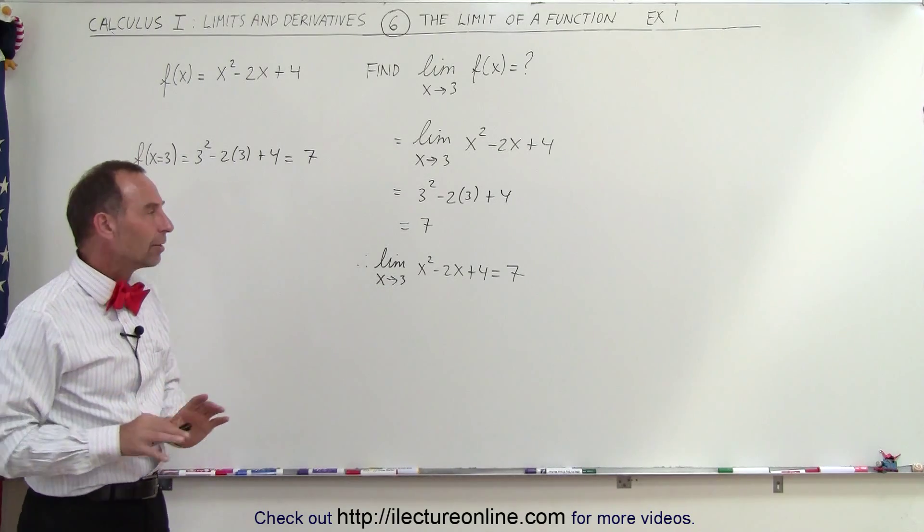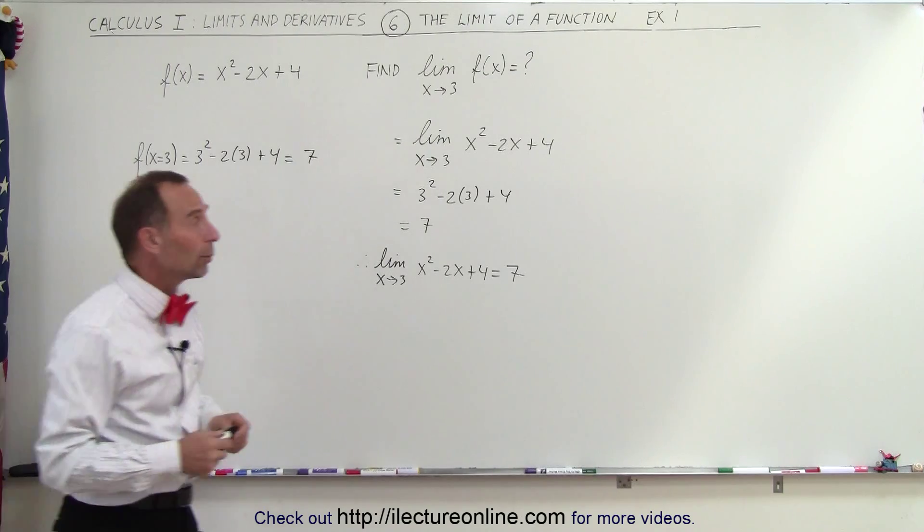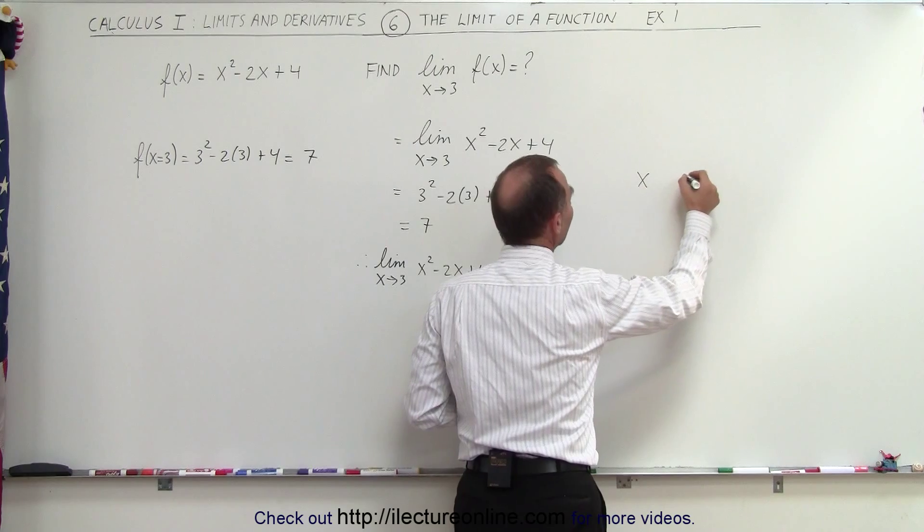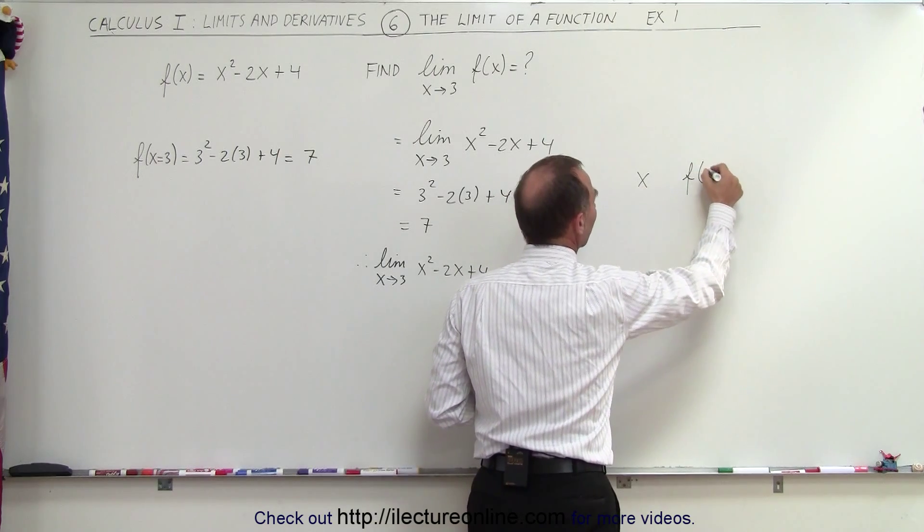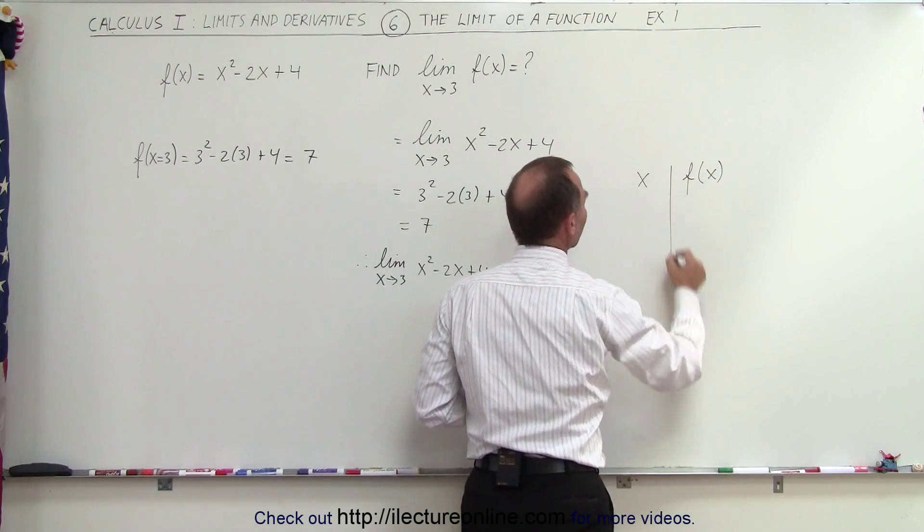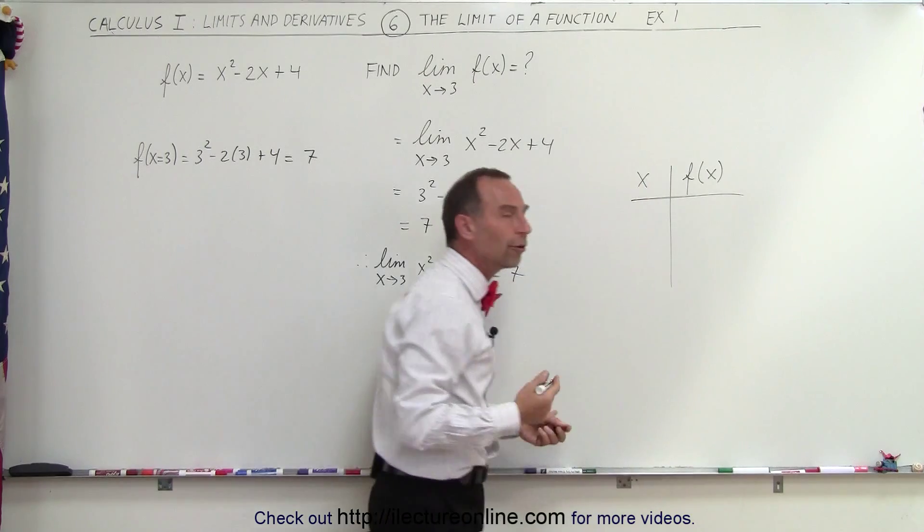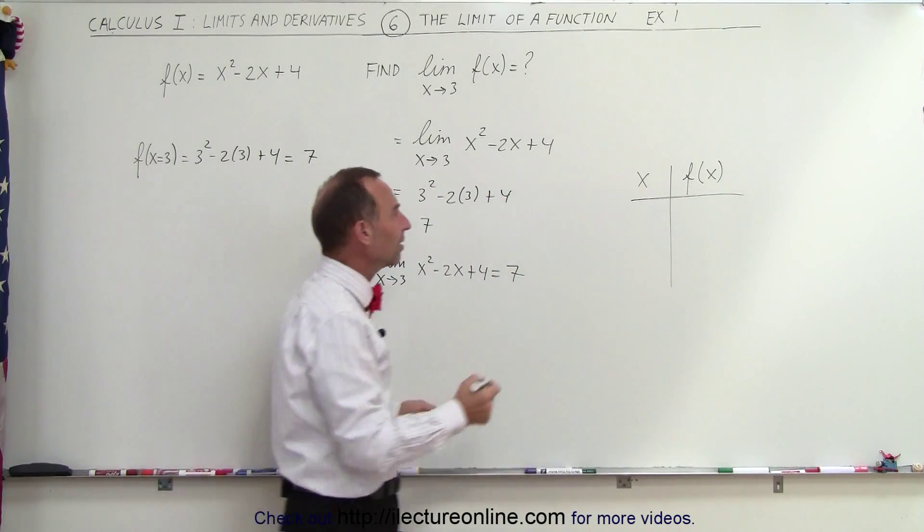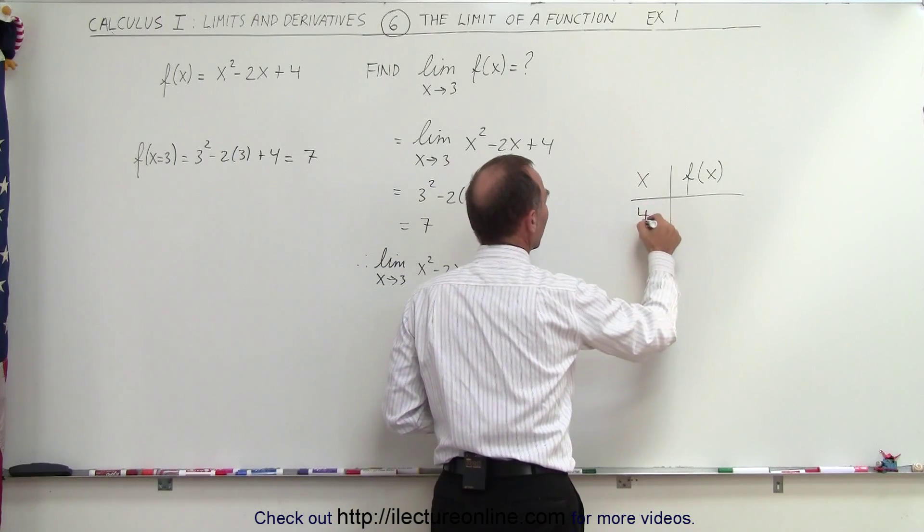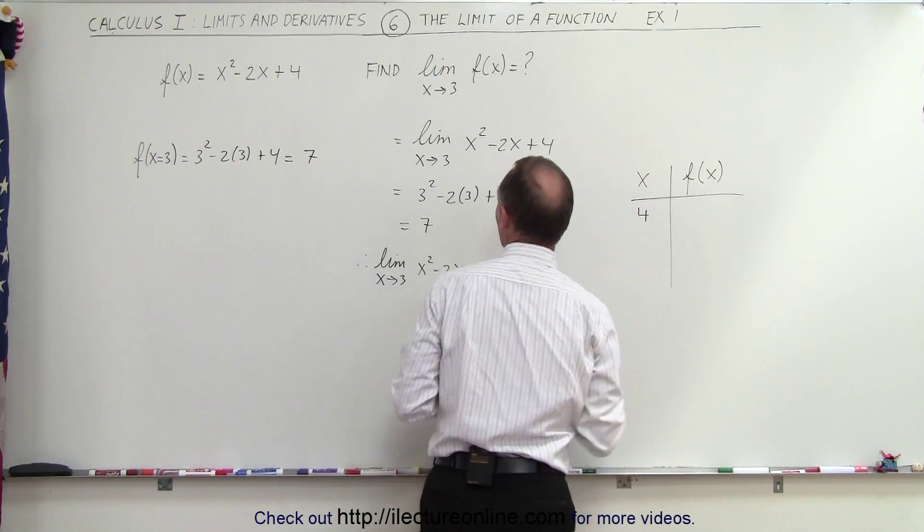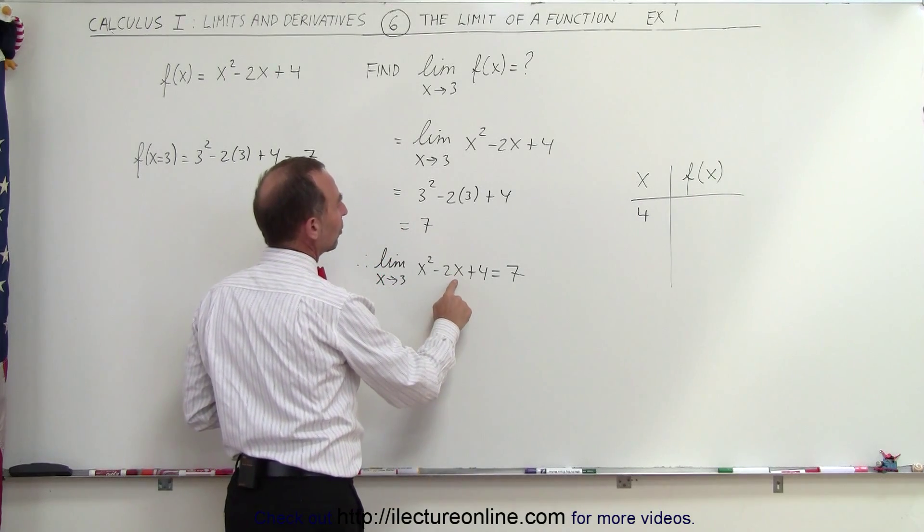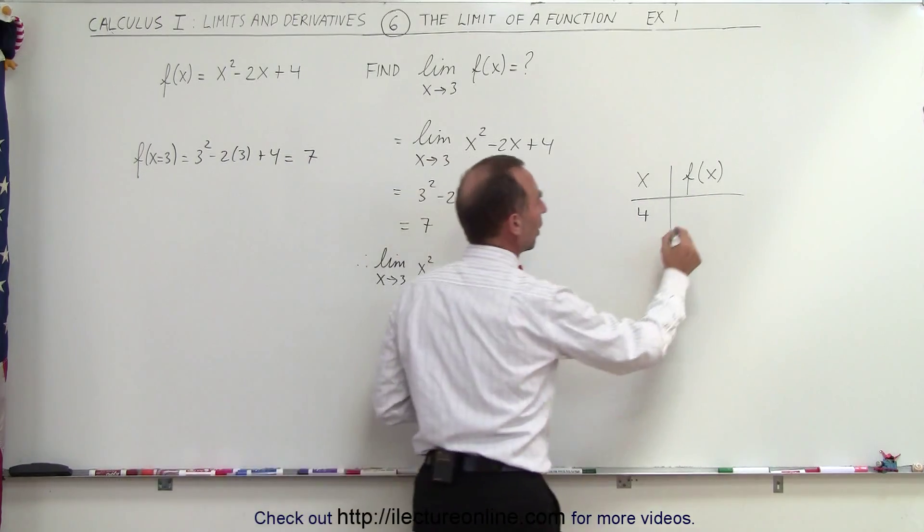Another way of looking at the limit of a function is we can do the following thing. We can set up a table of values. We can set up some x values and then the corresponding values for y or the function evaluated at that value. So, for example, let's say we start with the value of 4. When we plug in the value of 4 for x, what do we get? Well, that gives us 16 - 8, which is 8, plus 4, which gives us 12.